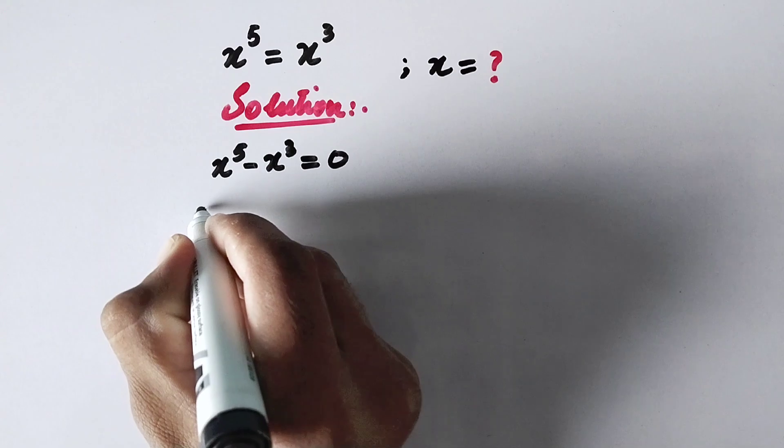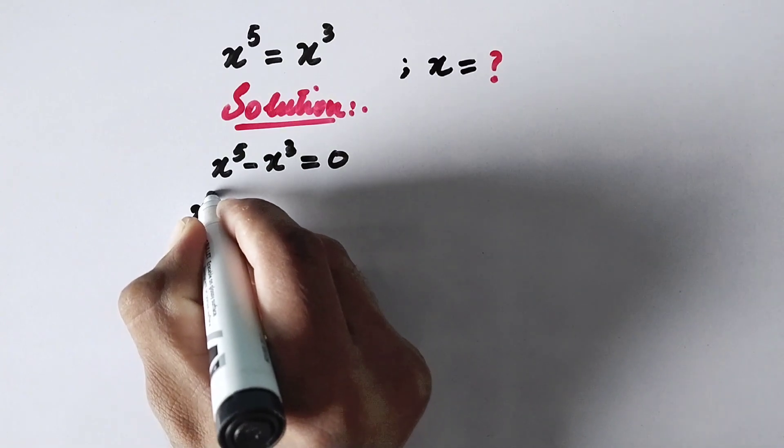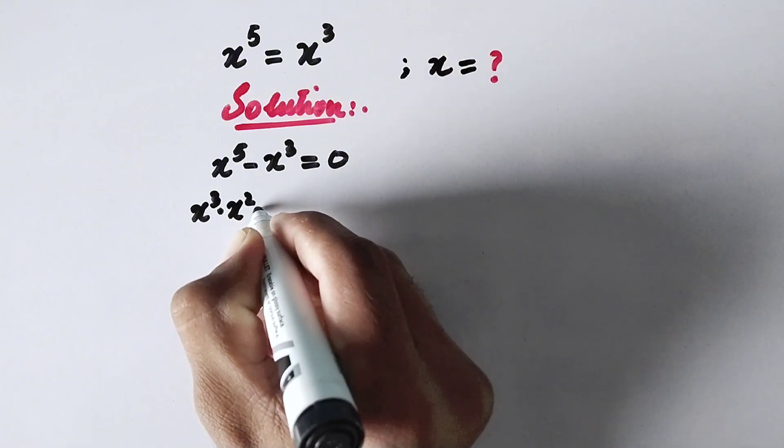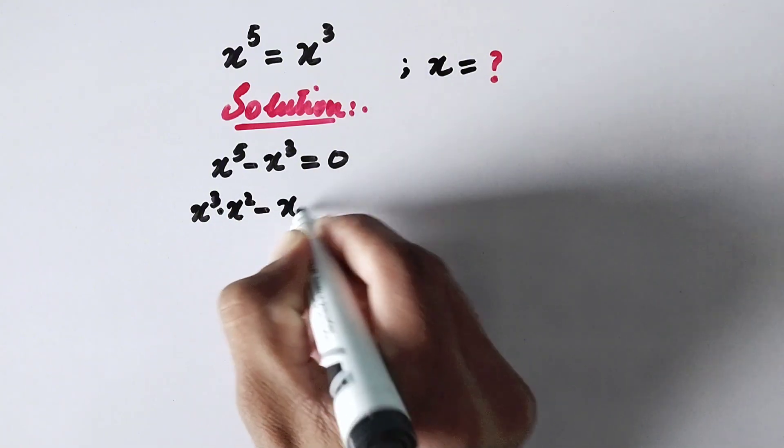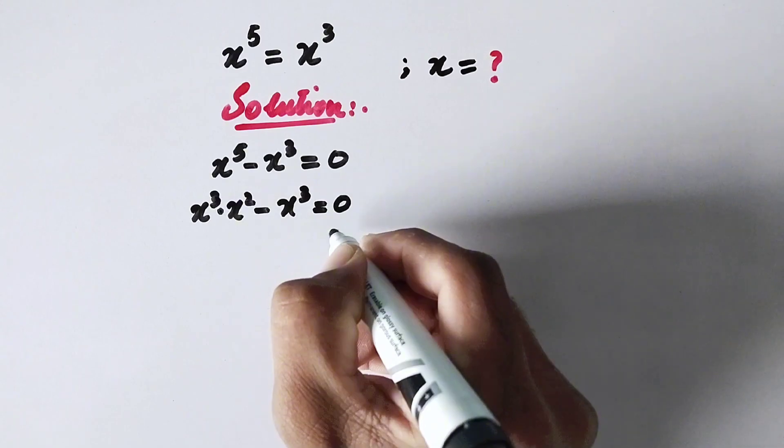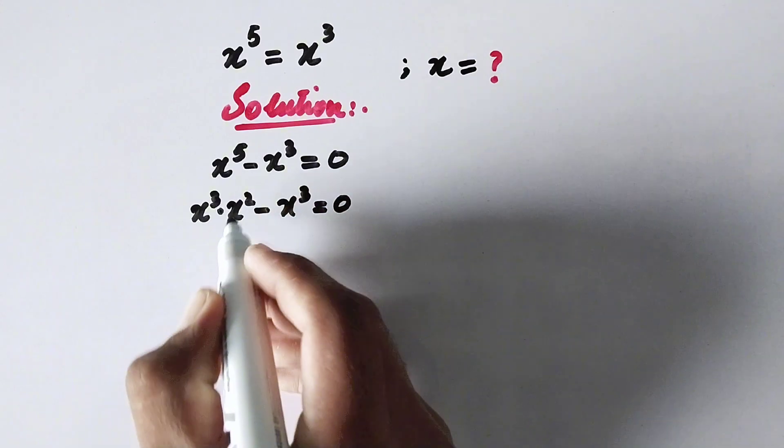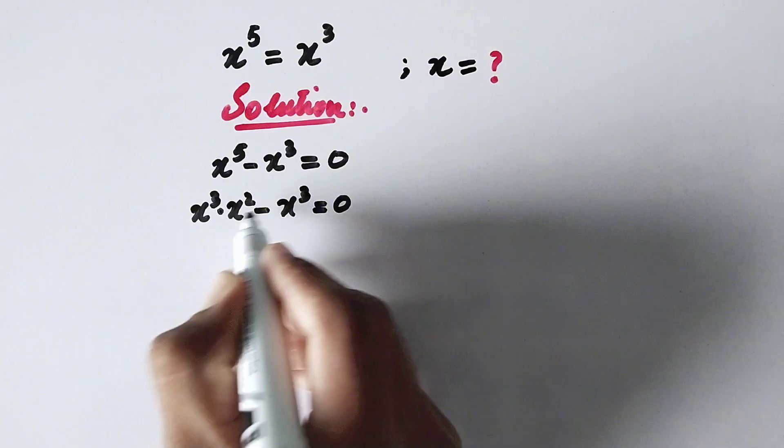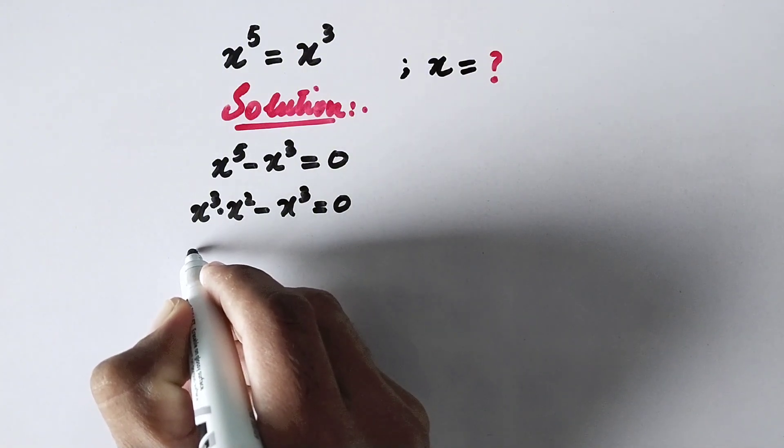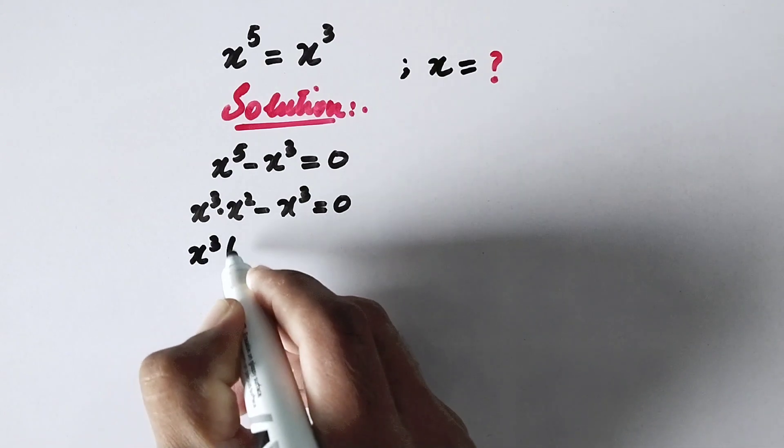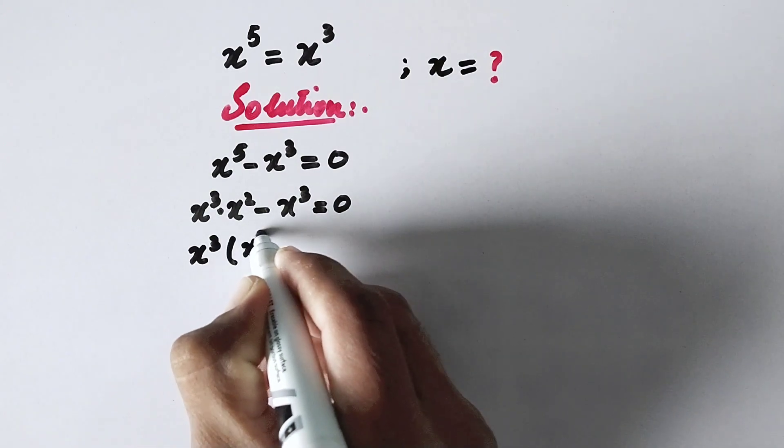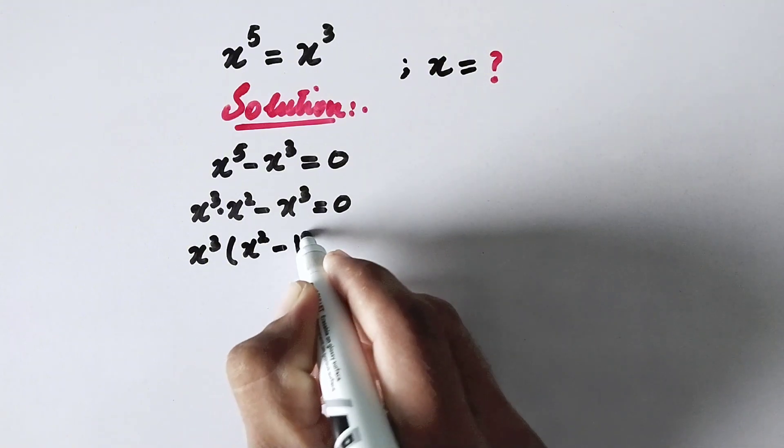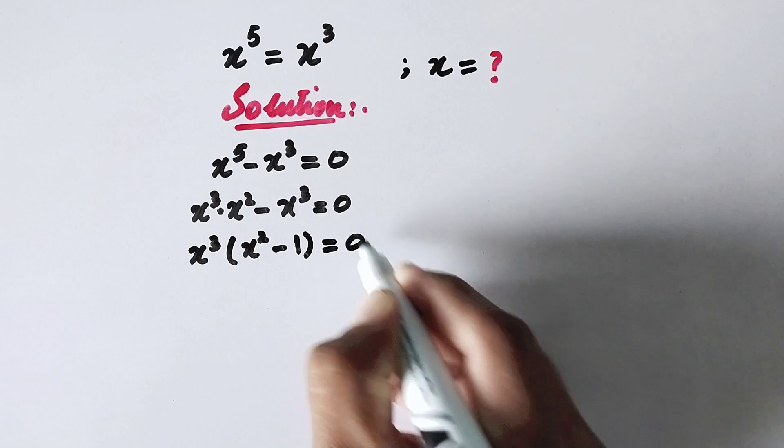Now we can take x cube as common from the equation. So it will be x cube, and here left will be x squared, minus here will be 1, equal to 0.